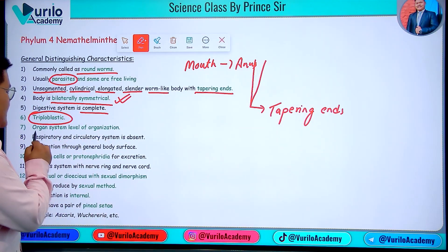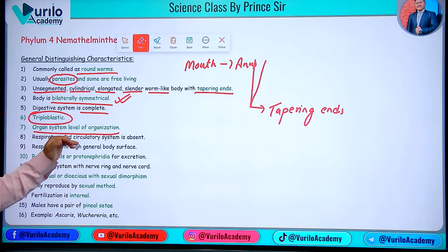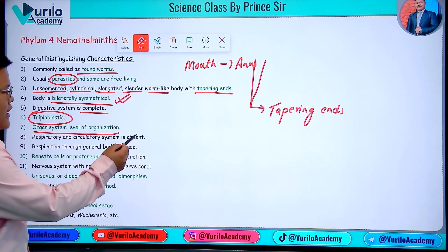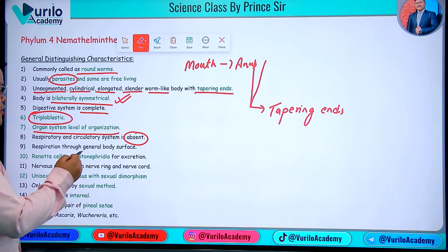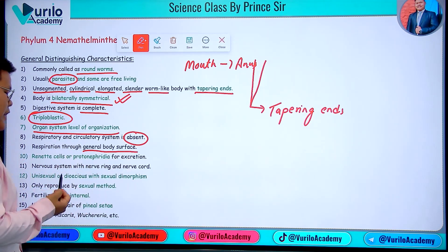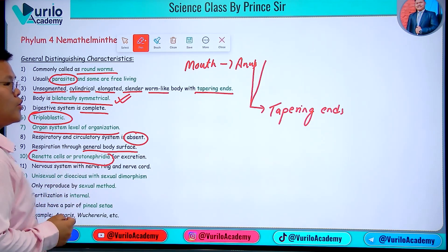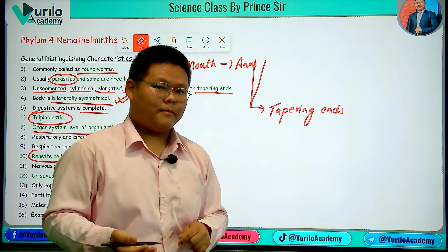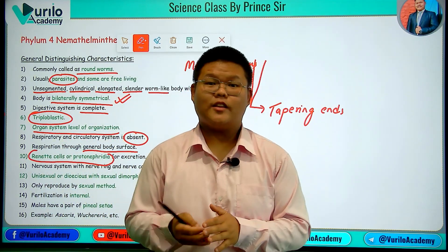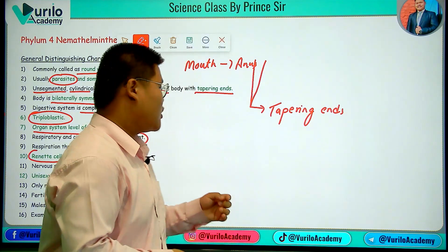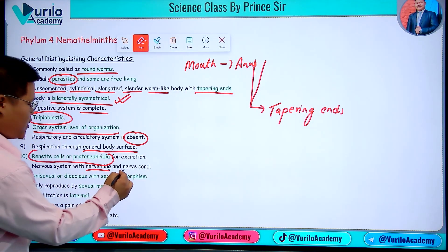Organ system level of body grade organization is present. Respiratory and circulatory systems are absent. The excretory system involves flame cells, also called renette cells, and protonephridia.